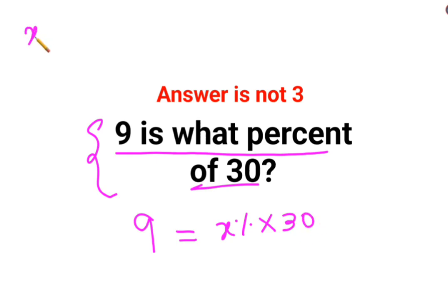Now whenever you have a percent sign, you can convert it into a fraction by dividing it by 100. So this can be written as 9 equals x upon 100 into 30.